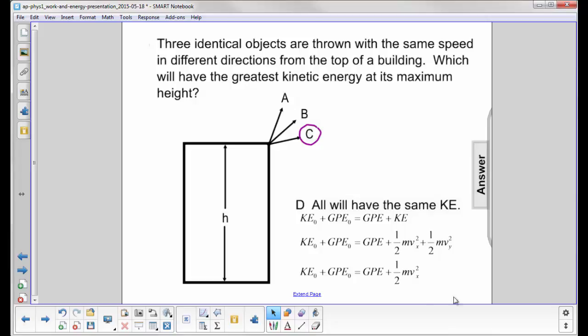The object that starts with the greatest velocity in the x-direction, which never changes because there's no acceleration in this direction, will wind up having the greatest kinetic energy at the end when it is at its maximum height.